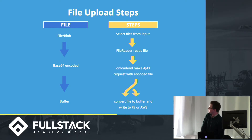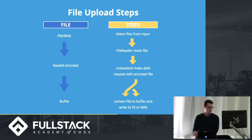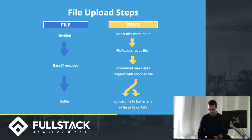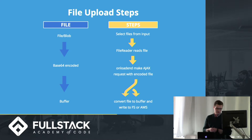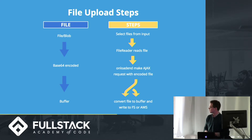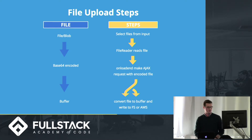Here's the outline of the steps we talked about. On the left side you've got your file blob, you encode it in base64, and once it gets to the server side you convert it to a buffer. The steps are: select the file from the input, FileReader will read it and encode it, then you make your Ajax request to your server, convert the file to a buffer, and store it somehow.